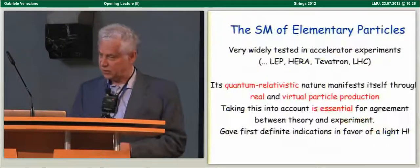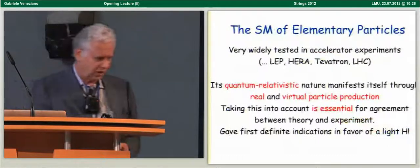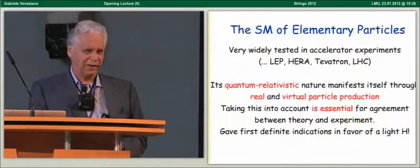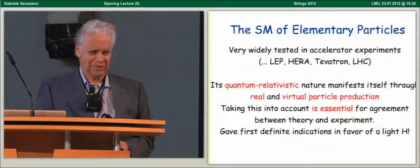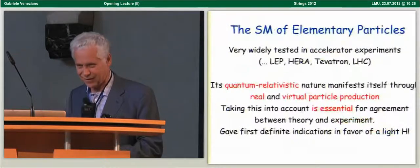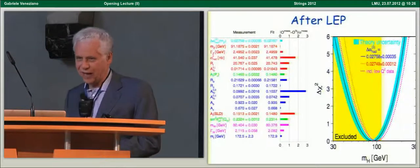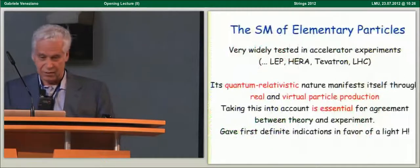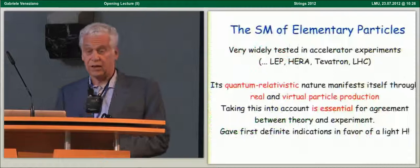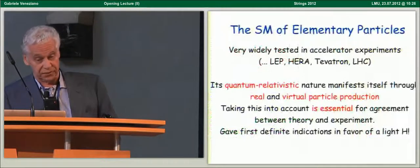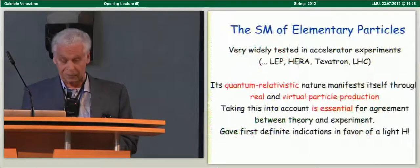And I want to emphasize that it is a quantum relativistic theory allowing real and virtual particle productions, and there is no way to find agreement between theory and experiments unless you take all these quantum radiative corrections into account. Johnny Iliopoulos, just a couple of days ago, was making the remark to me that tree-level standard model is off by 20 sigmas, or something like this, something incredibly bad.